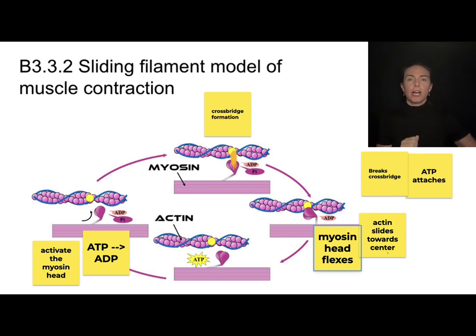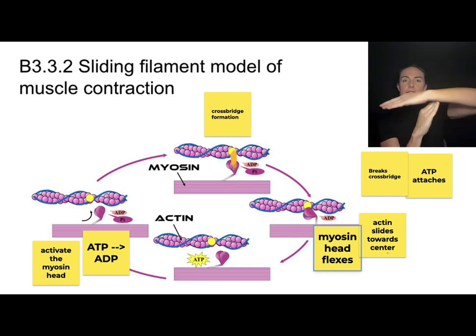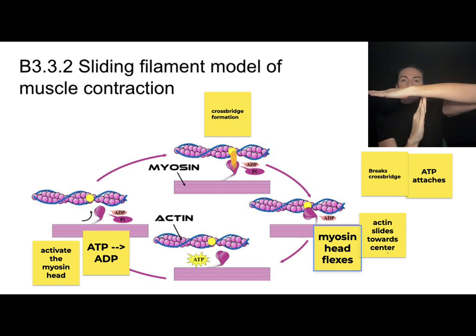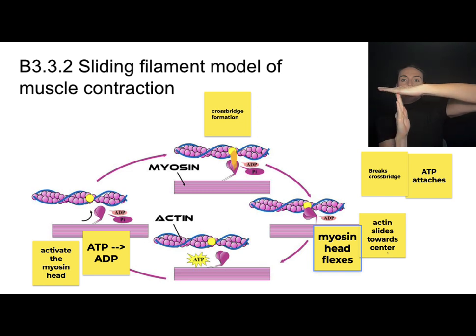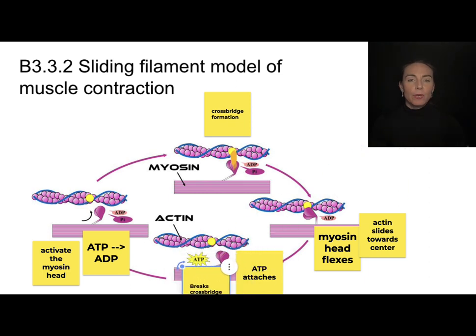Here's what we've seen so far: actin is here, myosin head here. ATP is hydrolyzed, activating the head; the myosin head attaches to actin forming a cross bridge; then the myosin head flexes and moves actin toward the center of the sarcomere. After flexing, we need to detach, reactivate, form a new cross bridge, and flex again. This is why ATP is needed for muscle contractions — to break the cross bridge. A new ATP molecule attaches, breaks the cross bridge, and the cycle starts over again.